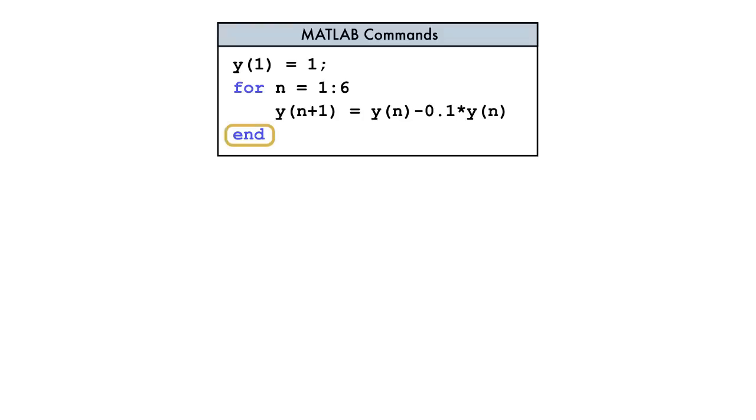The for loop terminates with the keyword end. The set of commands between the start and end of the for loop is called the body of the for loop. Typically, these commands depend on the value of the loop variable.